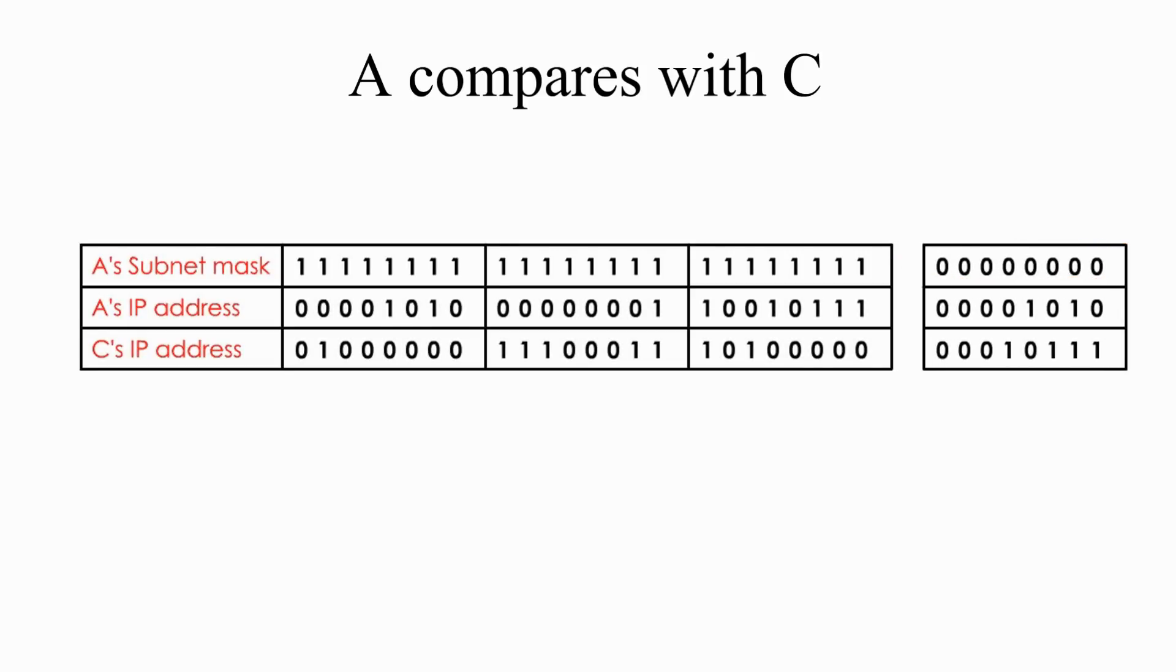Computer A would compare its IP address bit by bit with computer C's IP address only under the 1's part of the subnet mask. The result shows they are different. Even by the second bit, computer A can already tell their network ID is different. Thus, computer A knows computer C is on a different network.